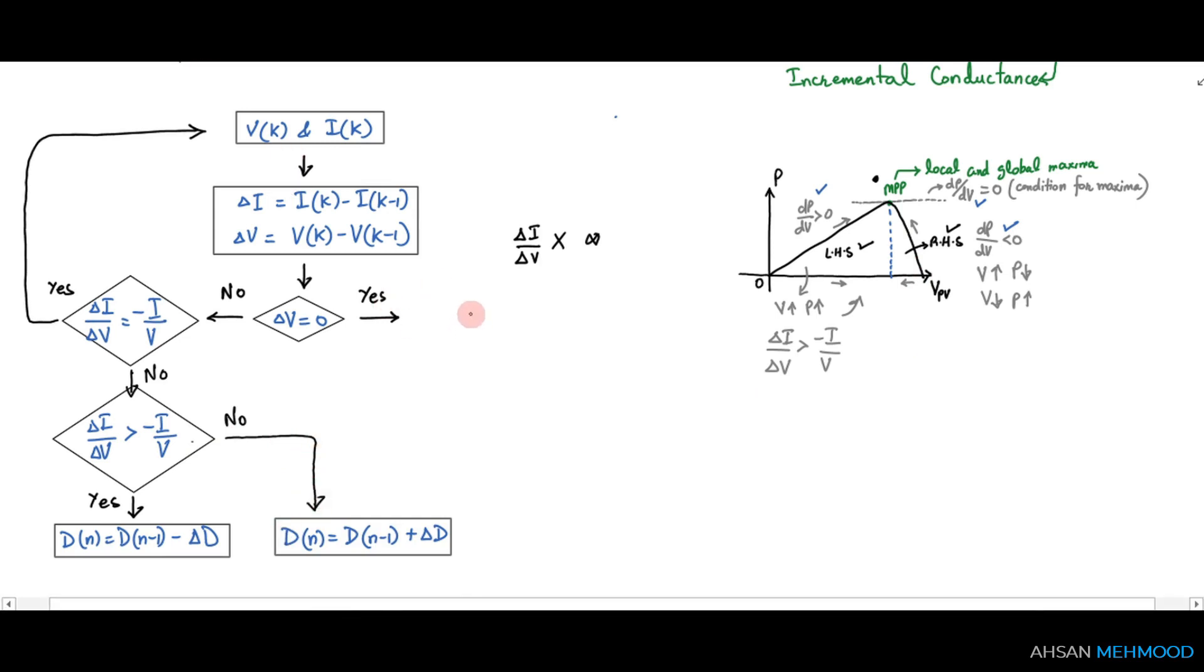If delta v is equal to zero, then delta i is used to go towards the maximum power point. If delta i is equal to zero, then everything is fine and we are operating at MPP. So we do not need to change the duty ratio d.